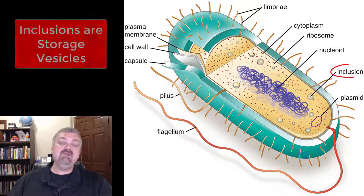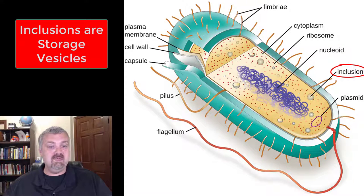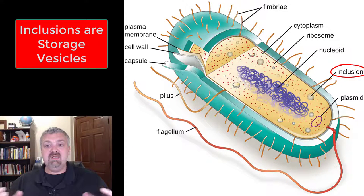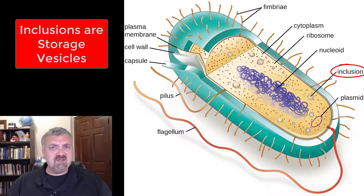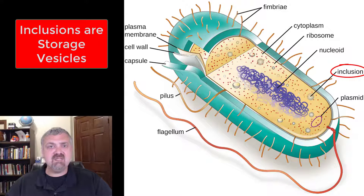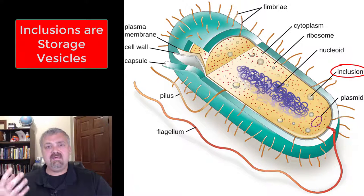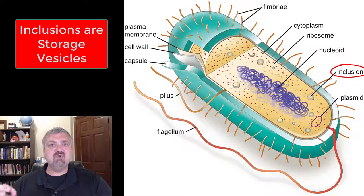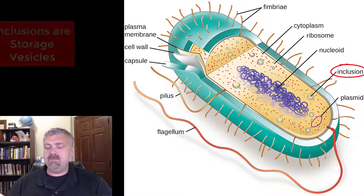Next we have inclusions. Inclusions are best thought of as storage vesicles — this is where the bacterium would be storing glycogen so it could be used as a fuel source, et cetera. So inclusions: just think storage vesicles.